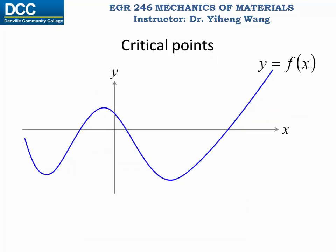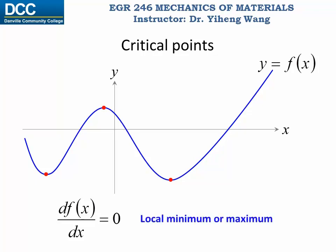From calculus we learned the concept of critical points: if this curve represents the graph of function f, then these points where the curve has a slope of zero are known as the critical points, and they correspond to where the derivative of the function is zero. As you can see from the graph, critical points always correspond to either a local minimum or maximum of the function value.